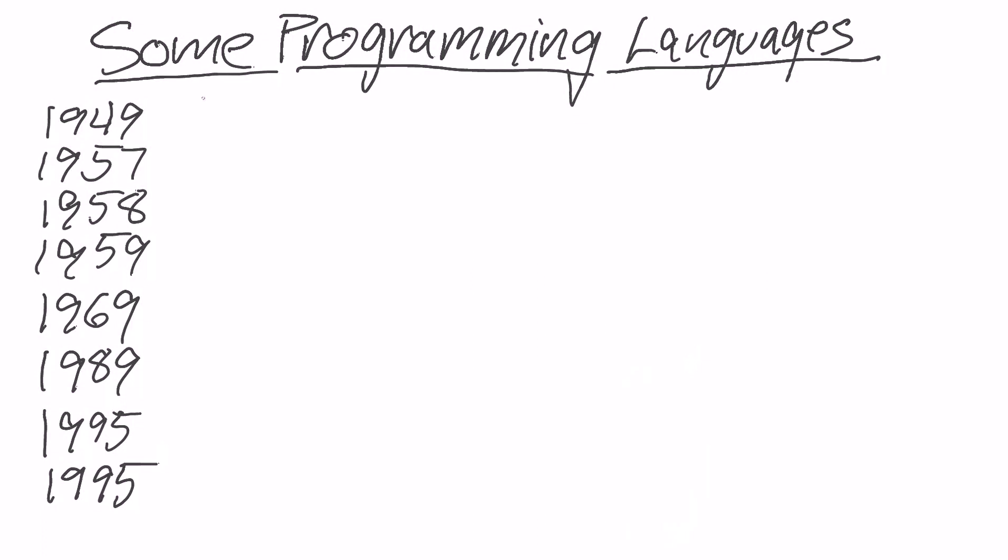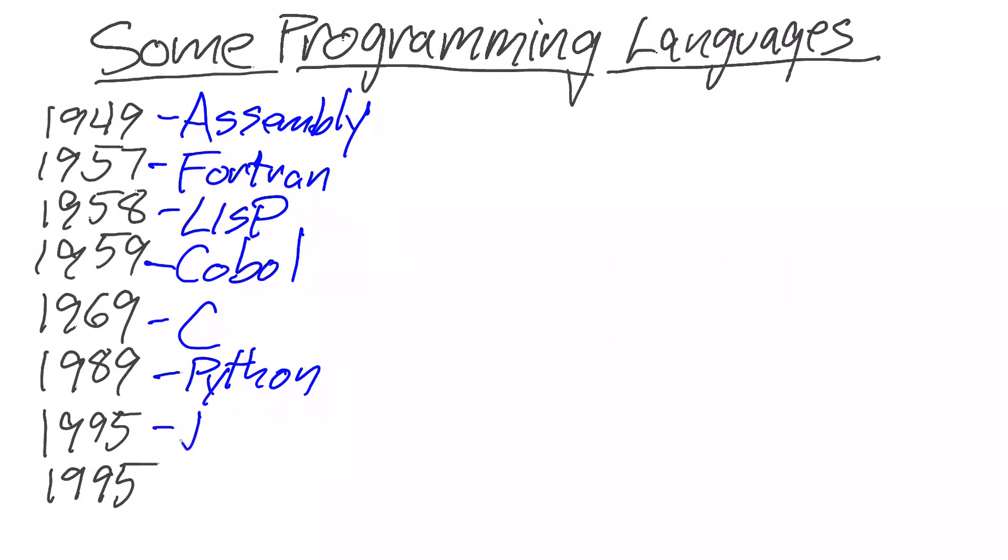We're going to start out with 1949, with a language called assembly. Its problem domain was anything. I'm just going to quickly write these out: Fortran for science, Lisp for math and lambda calculus, COBOL for business, C for writing Unix, Python for usability, Java for code that's portable between machines without a recompile, and JavaScript for the web.